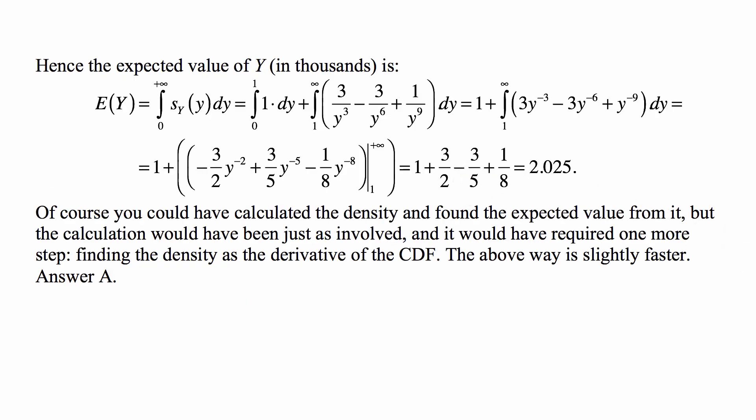We use the Darth Vader rule to calculate the expected value, which equals the integral from 0 to infinity of the survival function. That is the integral from 0 to 1 of 1, plus the integral from 1 to infinity of (3 over y cubed minus 3 over y to the 6th plus 1 over y to the 9th). The antiderivatives are: minus 3 halves times y to the negative 2, plus 3 fifths times y to the negative 5, minus 1 eighth times y to the negative 8. We evaluate this expression from 1 to plus infinity.